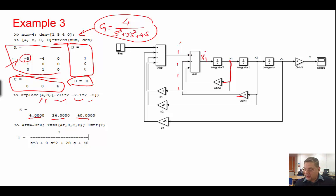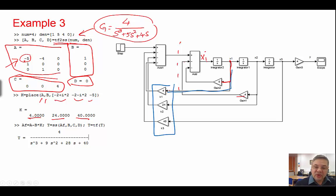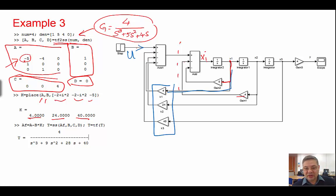The feedback gains are 4, 24, and 40, representing K1, K2, and K3. I take X1 multiplied by 4 as negative feedback plus U — this is the step input. That's the Simulink representation.